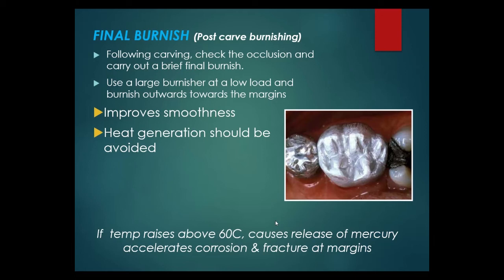After carving, the next step is final burnishing, also called post-carving burnishing. Check the occlusion and carry out a brief final burnishing using a large burnisher at low load, burnishing outwards towards the margins for improved smoothness. Heat generation should be avoided; if temperature rises above 60°C, it causes release of mercury, accelerates corrosion, and fracture at margins.